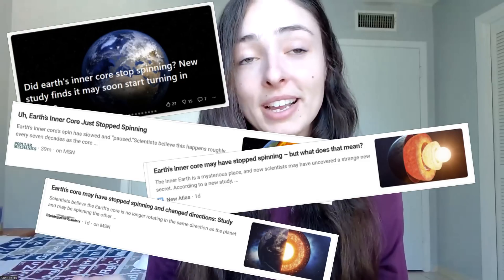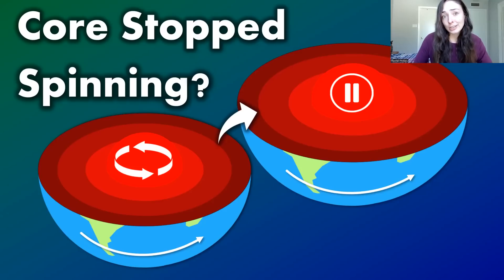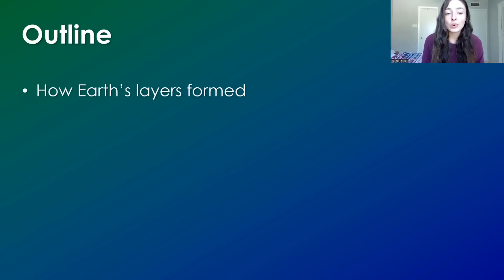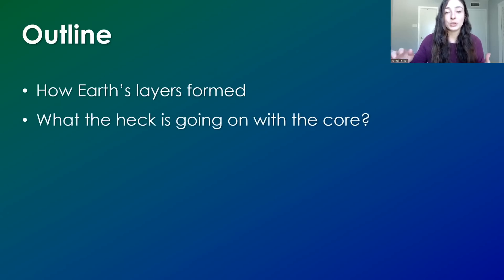If you've recently been seeing articles saying that Earth's core has stopped spinning, rest assured everything's okay. In this video, I will be answering the question of whether the core has actually stopped spinning, how we know this and how scientists figured this out, and what kind of implications that actually has. So I'll start by just going over how Earth's layers formed, and then I'll jump into what the heck is going on with the core.